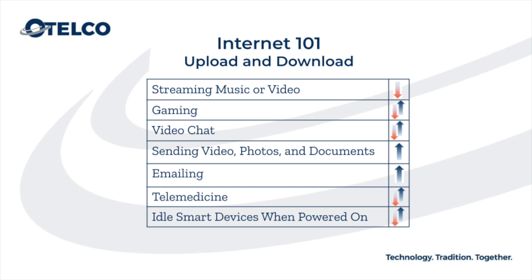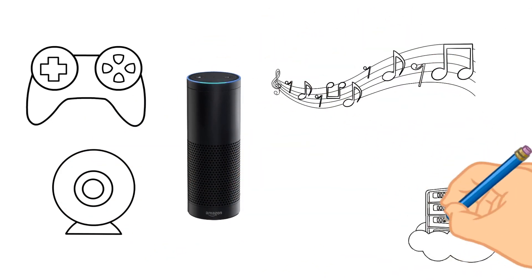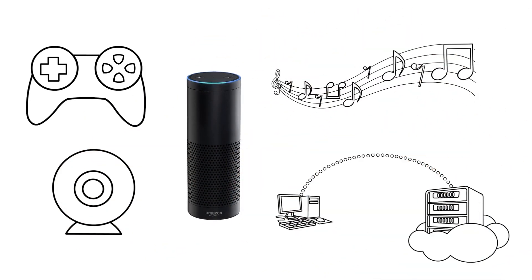Anything that comes to you from the internet is download: streaming video entertainment, receiving emails and other files, and audio and video from the person you're Skyping with. There are many activities that require both upload and download at the same time, like gaming, video chatting, and smart home devices like Alexa. All of these activities combined are why the size of the pipe is so important.